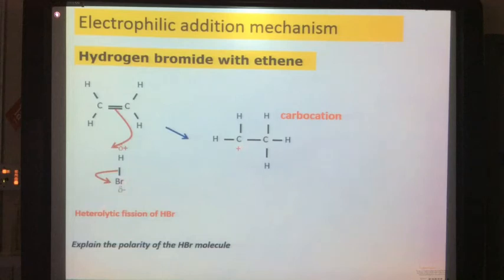The bromine has received an extra electron effectively so we show it as a bromide ion and you can see that there would be an attraction, a movement of a pair of electrons to this positively charged carbon and we'd form a bond and make the product bromoethane.